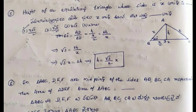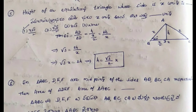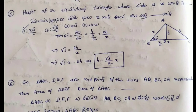Next question: height of an equilateral triangle whose side is x units is dash. The equilateral triangle has all sides equal to x. All angles are 60 degrees. To find the height, we draw a median from vertex A to point D on BC. Using tan 60 degrees equals opposite side over adjacent side, that is h over x by 2, which gives root 3 equals 2h by x. Therefore h equals root 3 by 2 times x. The height of an equilateral triangle is root 3 by 2 times x.